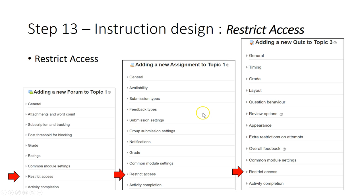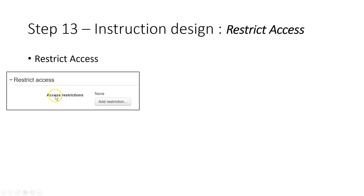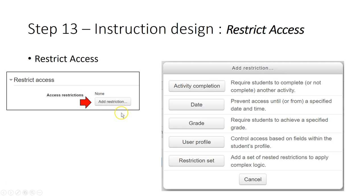These restrict access settings apply to all activities and resources, including URL, course synopsis, folder, and files. Regardless of whether it is a resource or activity type, the setting is the same. When you click restrict access, you will see the access restrictions — the default setting is none. What you need to do is click add restrictions and it gives you the options.